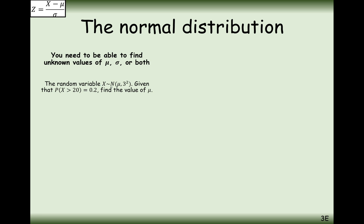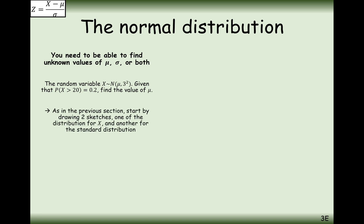We have a question where the random variable X is normally distributed with a mean of mu and a standard deviation of 3. Given that the probability X is greater than 20 equals 0.2, find the value of mu. As in the previous section, start by drawing two sketches — one of your X distribution and the other of the standard normal distribution.